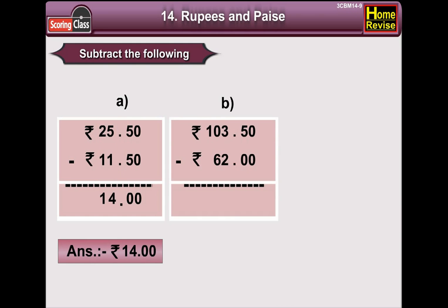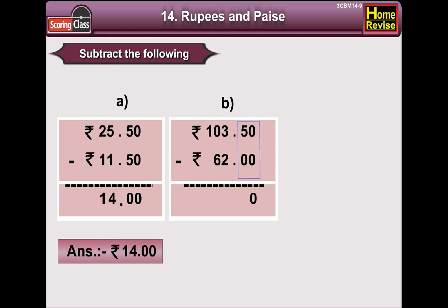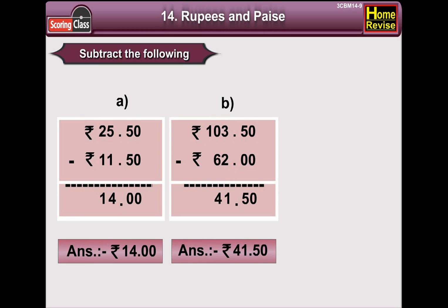B: Rupees 103 and 50 paisa minus rupees 62. Now, 0 minus 0 is 0, 5 minus 0 is 5. In the rupees column, 3 minus 2 is 1. We have to subtract 6 from 10, so it is 4. The answer is rupees 41 and 50 paisa.